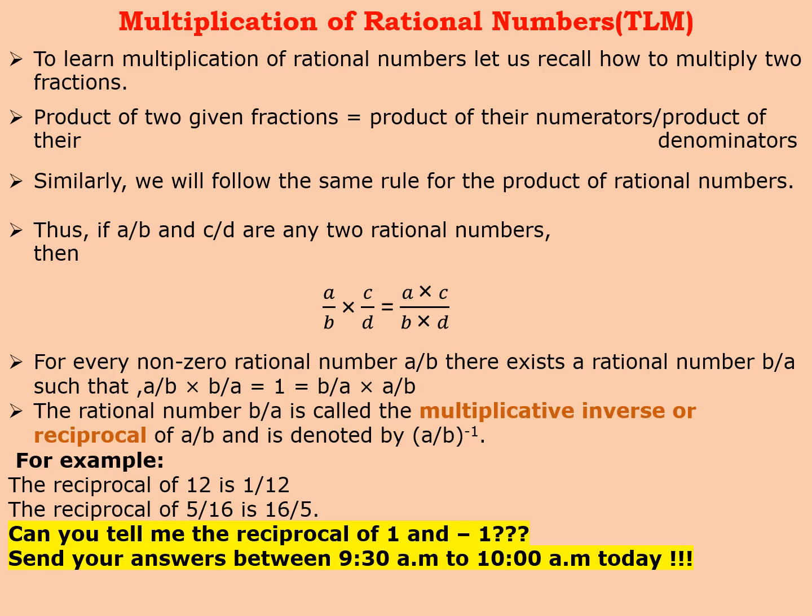Moving on to the third part of the chapter, it is talking about multiplication of rational numbers. We have already studied multiplication of fractions. Remember what we used to do? We used to multiply the numerators and the denominators and then reduce them to the lowest form. Same technique is applicable here also. To learn multiplication of rational numbers, let us recall how to multiply two fractions. Product of two given fractions was equal to product of their numerators divided by product of their denominators. Similarly, we will follow the same rule for the product of rational numbers also.